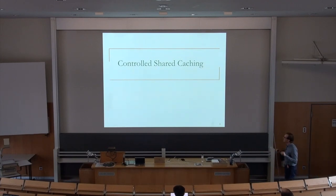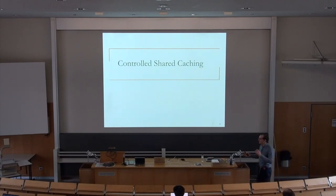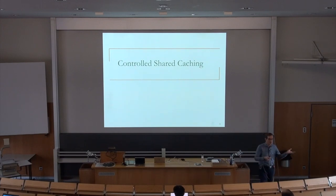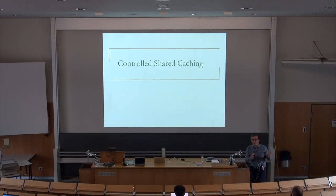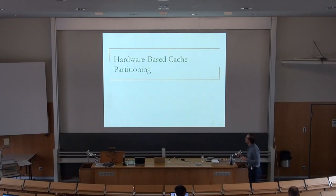We've seen multiple examples: utility-based cache partitioning, which influenced a lot of research, and fair cache sharing and partitioning. The goal in fair cache sharing was fairness; in utility-based cache partitioning the goal was application-level throughput. Now we're going to look at controlled cache sharing. All those previous approaches started from a shared cache and asked how do you partition it.